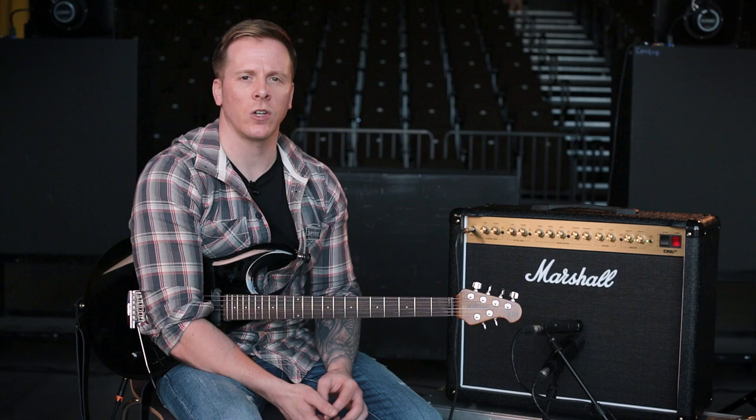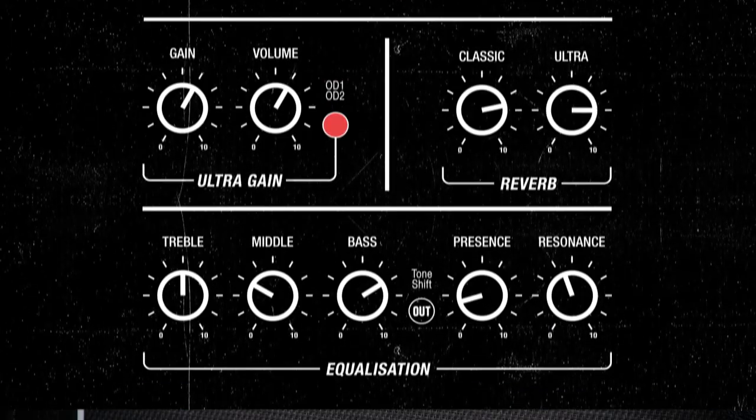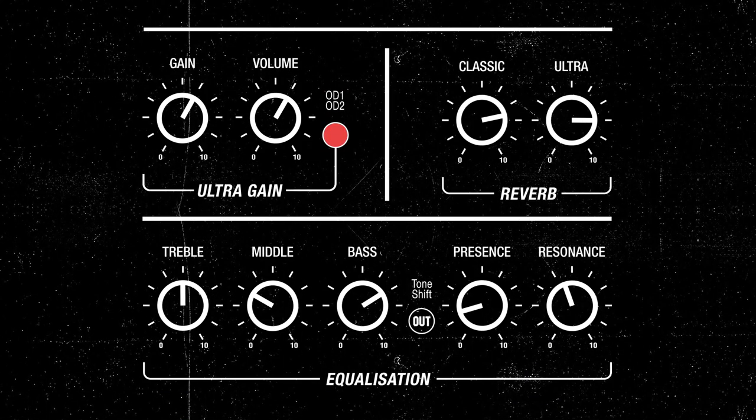This is a modern high-gain sound using the DSL. I'm using channel 2, the ultra-gain channel, on OD2 — overdrive 2. The gain is set to around 1 o'clock, and the volume is also around 1 o'clock.